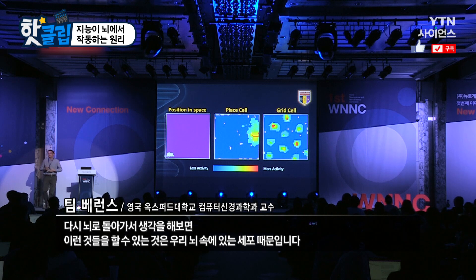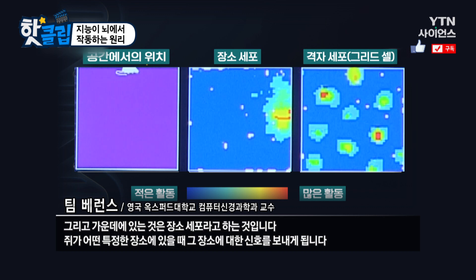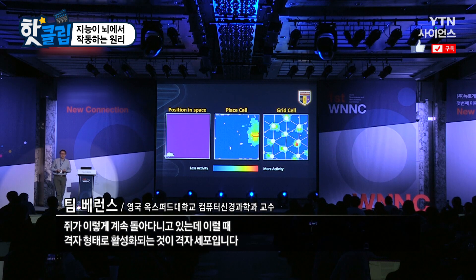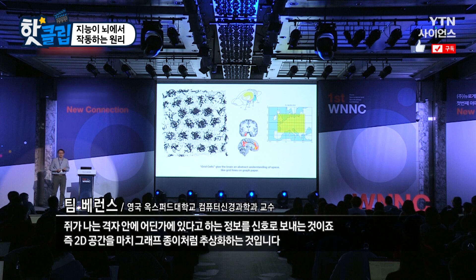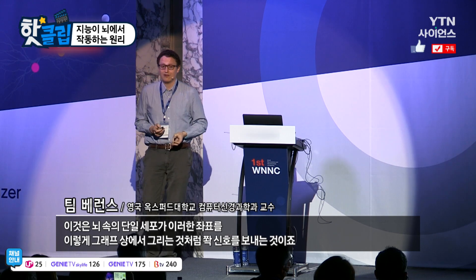The reason you can do this is because of some cells in your brain. Here is a rat, and I'm showing you two types of cell and when they send messages. The cell in the middle is a place cell — it sends a message whenever the rat is in a particular place; for the purposes of today, it's a boring cell. But the cell on the right is amazing because it fires in lots and lots of places, and those places lie on a perfect grid. Whenever it passes any of those points on the grid, it sends a message saying 'I'm on this grid.' That cell is an abstraction of 2D space, just like grid lines on a piece of graph paper. It's a single cell in your brain firing out the coordinates in a graph.